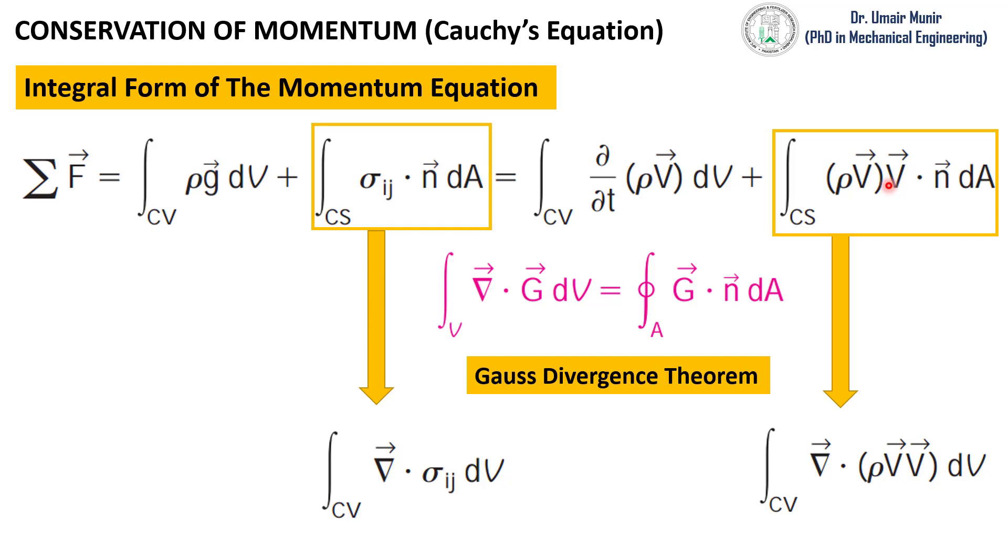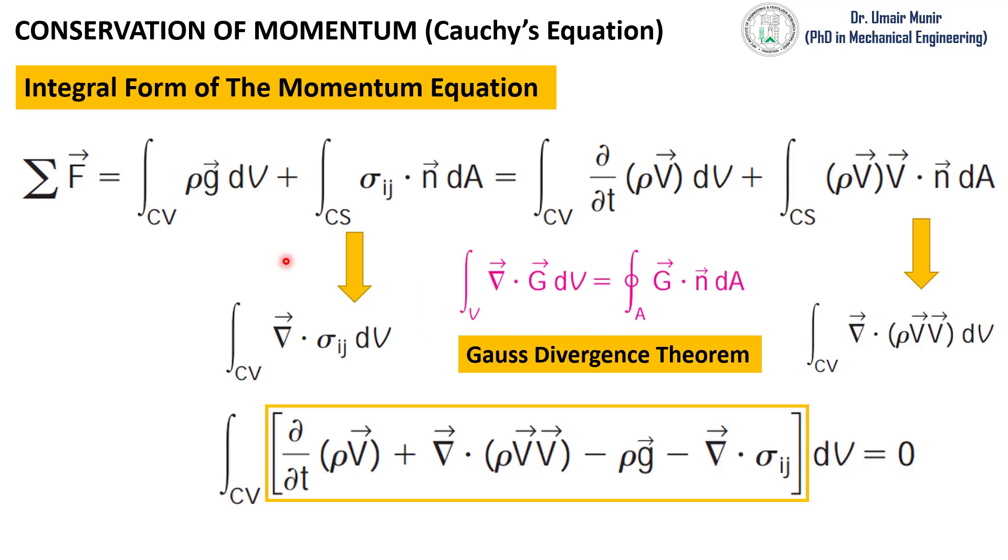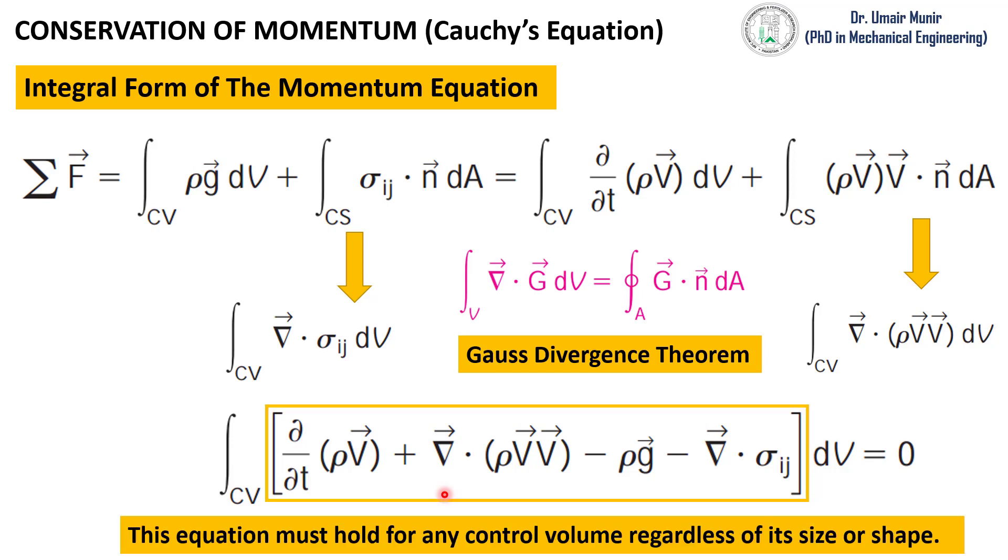So now we have all four volume integrals in this equation and we can write them in this summation form. Now it is a single volume integral and this equation holds for any control volume. It can be written for any control volume regardless of its shape and size.